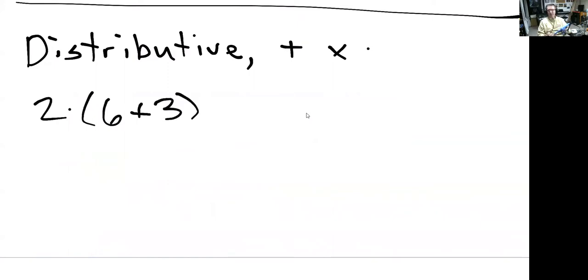The distributive property says that this result, which is 2 times 9, which is 18, getting ahead of myself here, we can do that two different ways. We can first add so we get 9 and then multiply by 2.